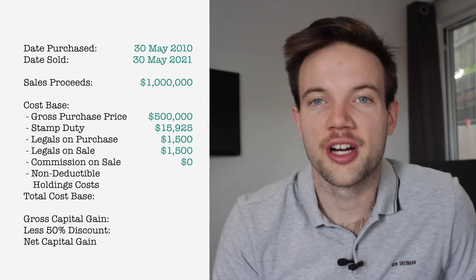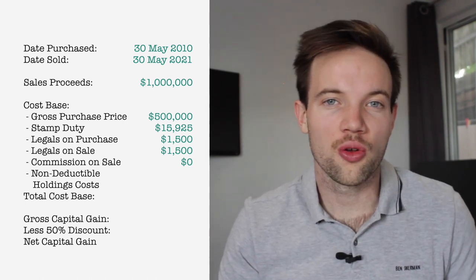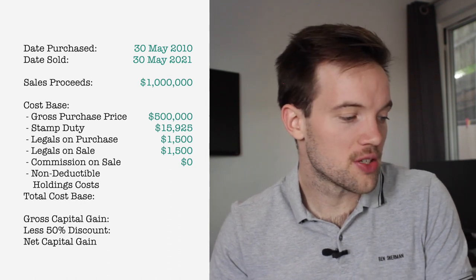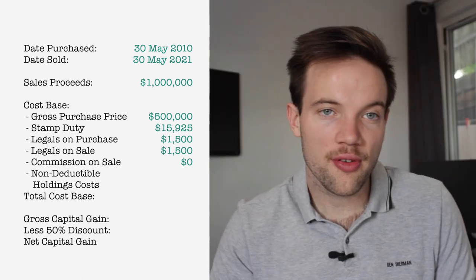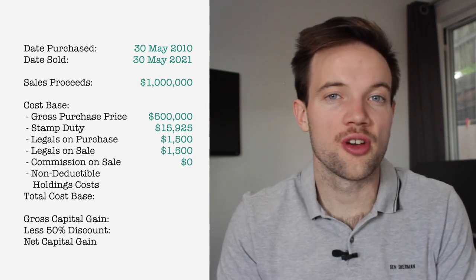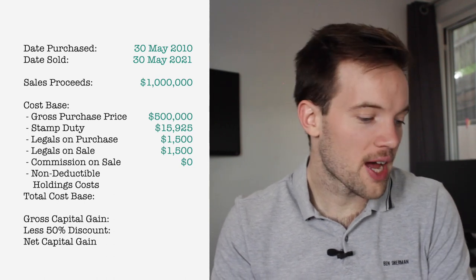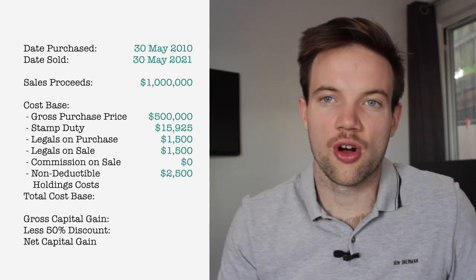Next on the calculator are any non-deductible holding costs. This is a broad category. From our two settlement statements, the only item is registration fees from the purchase. Note that the body corporate certificate, building and pest compliance reports, council rates, and registration fee in the top half of the purchase settlement statement are deductible costs included in your tax return as deductions against income when you rented the property. We're adding the $2,500 registration fees into our non-deductible holding costs.